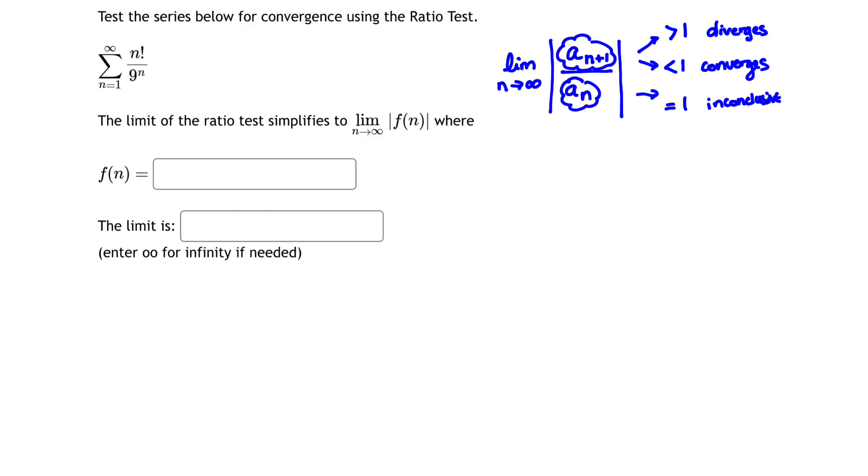So let's go ahead and calculate our limit. I'm going to begin with taking the limit as n goes to infinity, and now I have two terms: my a sub n is on the bottom and my a sub n plus 1 is on the top.